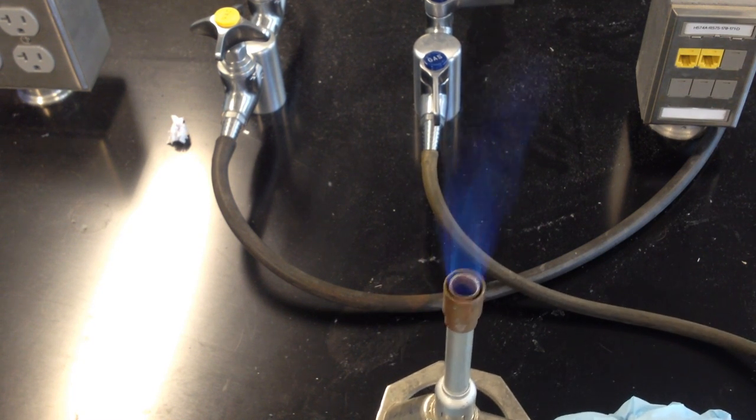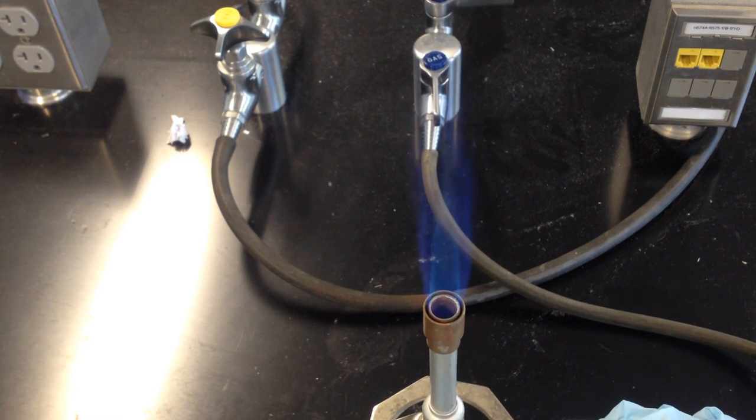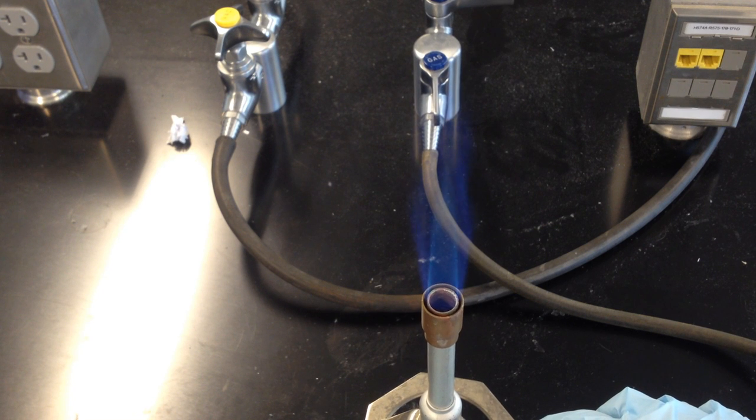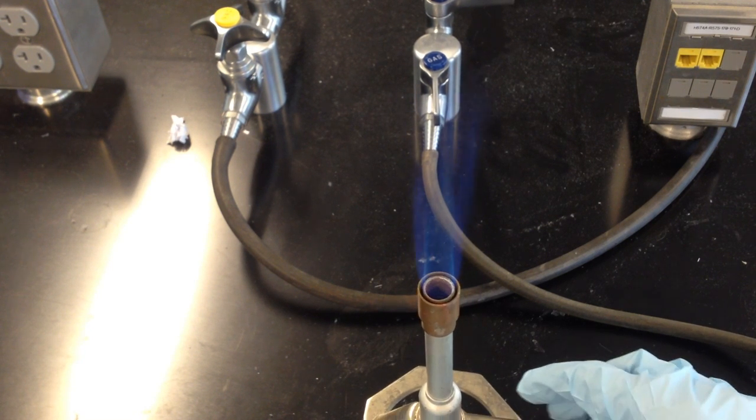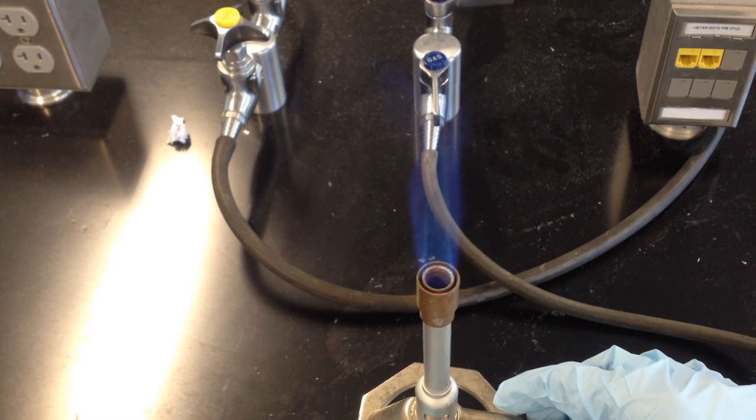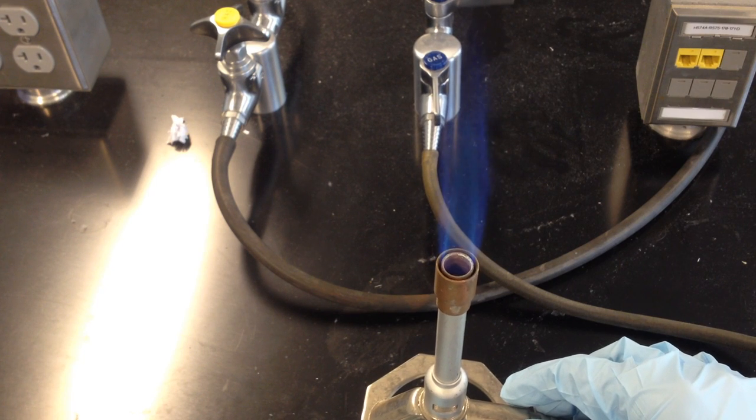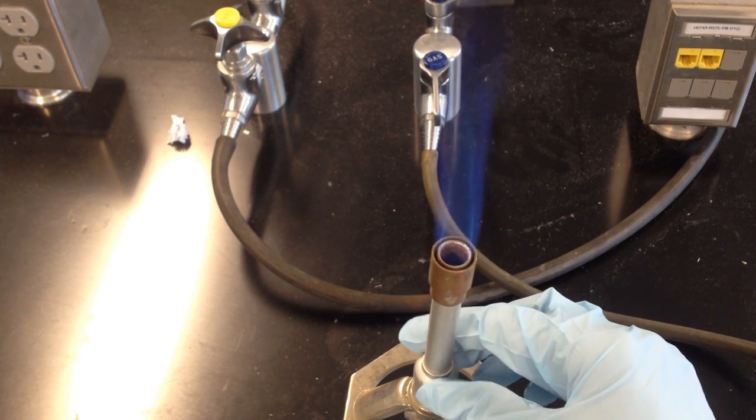Now, what you're looking for in the flame is two distinct parts. You'll notice a blue outer flame and a lighter blue inner flame. That inner cone is the hottest part of the flame, and so you want to make sure that inner cone is very clear.